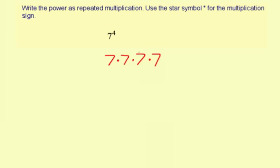Make sure you get those star symbols or the asterisks in there. That's how your answer should look. Repeated multiplication of seven to the fourth.